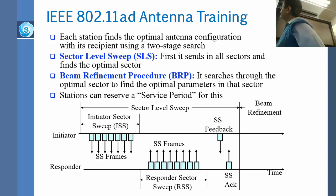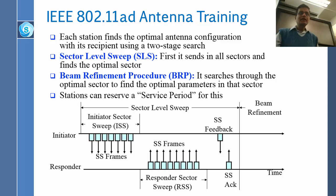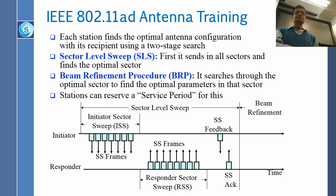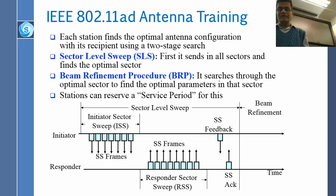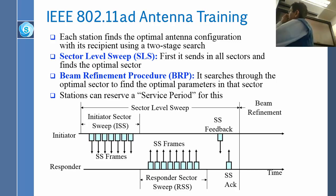The initiator sends a frame out and then gets the feedback — the responder sweep. The responder is also doing this. Here is the interesting thing: I am trying to find where you are, and you are trying to find where I am. So you are going to be rotating around, I am going to be rotating around, and at some point we will meet — we will be able to hear each other. This is the initiator, this is the responder, this is the feedback, and the acknowledgment. Now we know exactly which sector we are in.